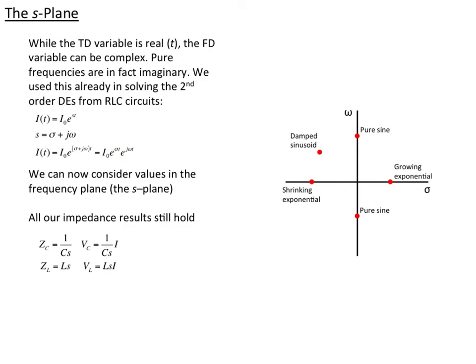Now we have to consider the kinds of frequencies we have in our frequency domain. In the time domain, we just have a real value t for the time, but the frequency domain variable can be complex. If I have a pure frequency, a sine wave or a cosine, then my frequency domain variable is, in fact, purely imaginary. I'm going to have a jω, in other words.